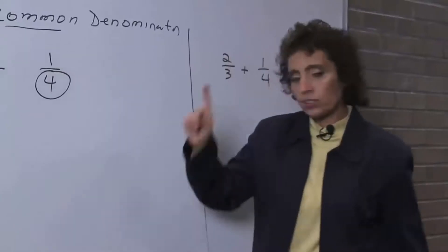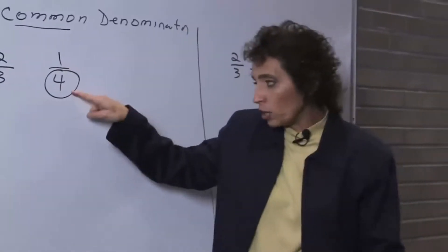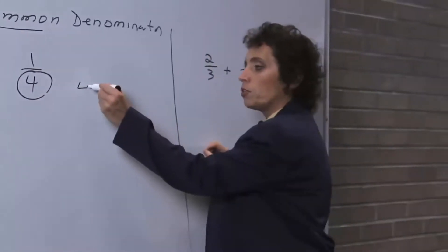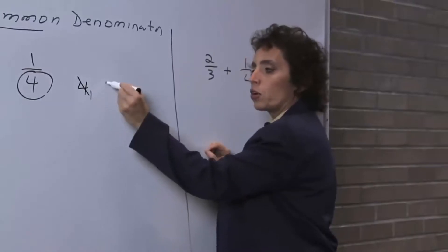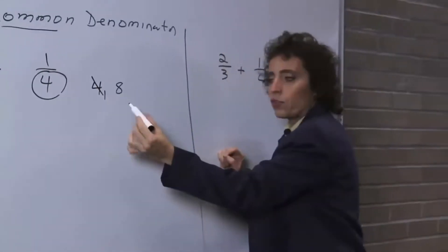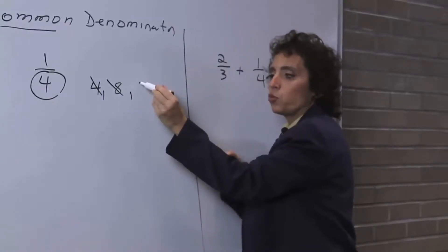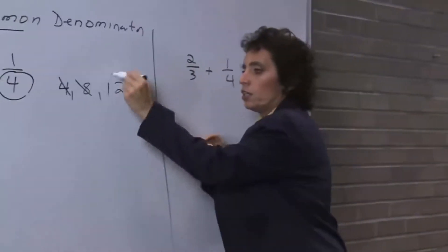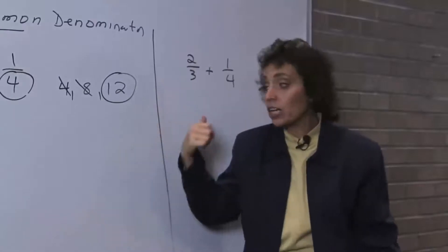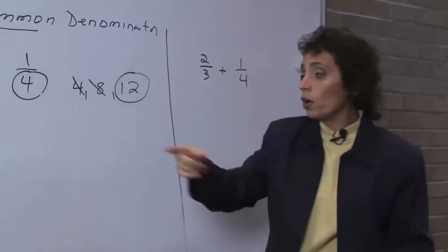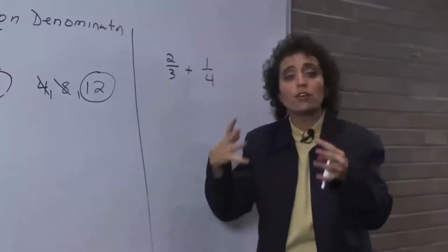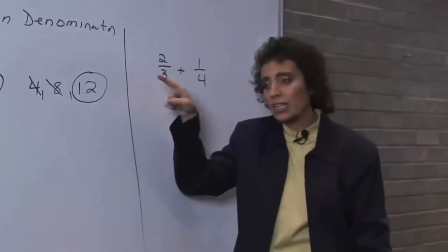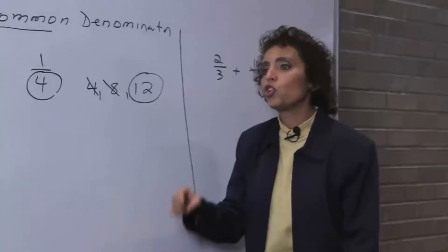I take the biggest number, the biggest denominator, and take multiples of that number — that's the multiplication table. Step by step: does the small number divide into the big number without a remainder? That answer is no. So I start taking multiples. 4 times 1 is 4 — doesn't work. 4 times 2 is 8 — does 3 go into 8? Nope. 4 times 3 is 12 — does 3 go into 12? Yes. So that's the LCD. Least common denominator means the first one you can get to. The LCD is 12.